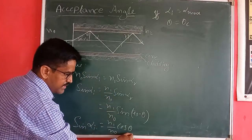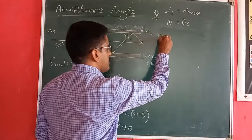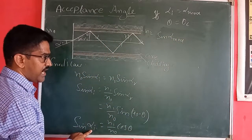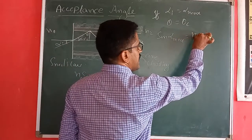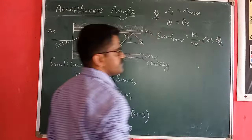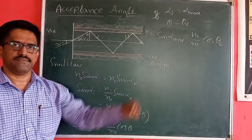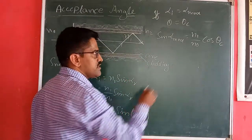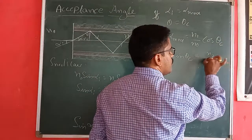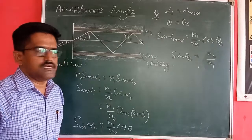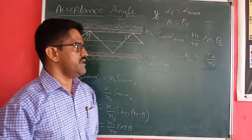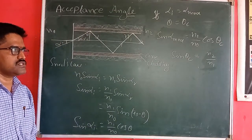If we take this equation in terms of sin(alpha_max), instead of sin(i) we write sin(alpha_max). So sin(alpha_max) = (N1/N0) cos(theta_c). We know from a previous result that sin(theta_c) = N2/N1, where N2 is the refractive index of cladding and N1 is the refractive index of core.